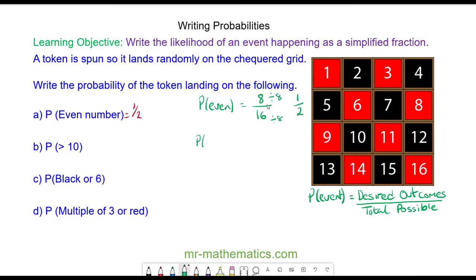The probability of picking a number greater than 10: there are still 16 possible outcomes, and the numbers greater than 10 are 11, 12, 13, 14, 15, and 16, which is 6 outcomes in total. We can simplify this fraction by dividing both by 2, so we have 3/8.